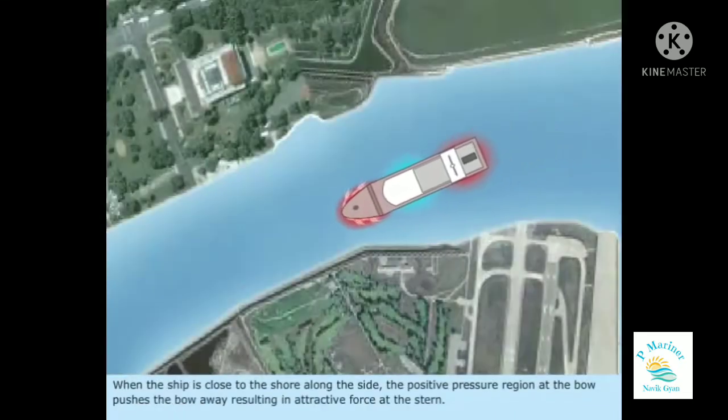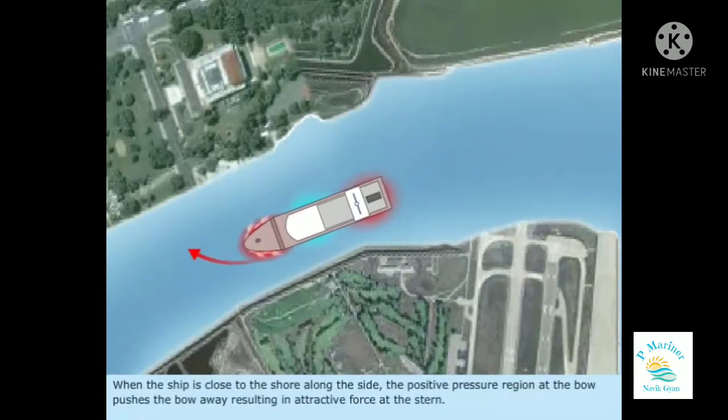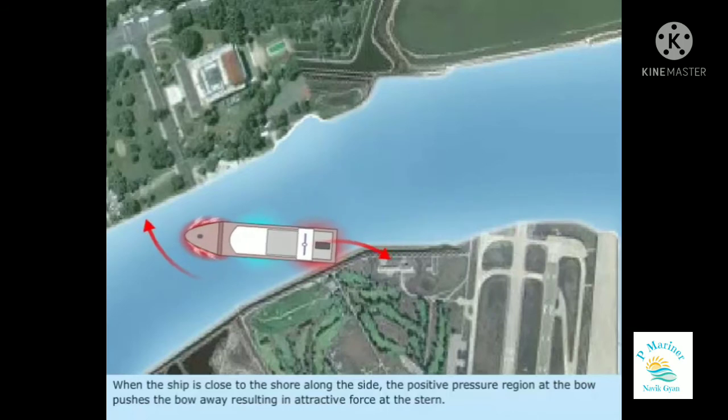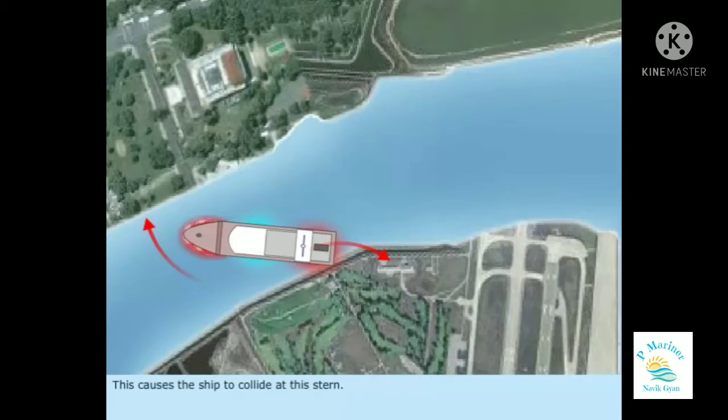When the ship is close to the shore along the side, the positive pressure region at the bow pushes the bow away, resulting in attractive force at the stern. This causes the ship to collide at the stern. This is called the bank effect.